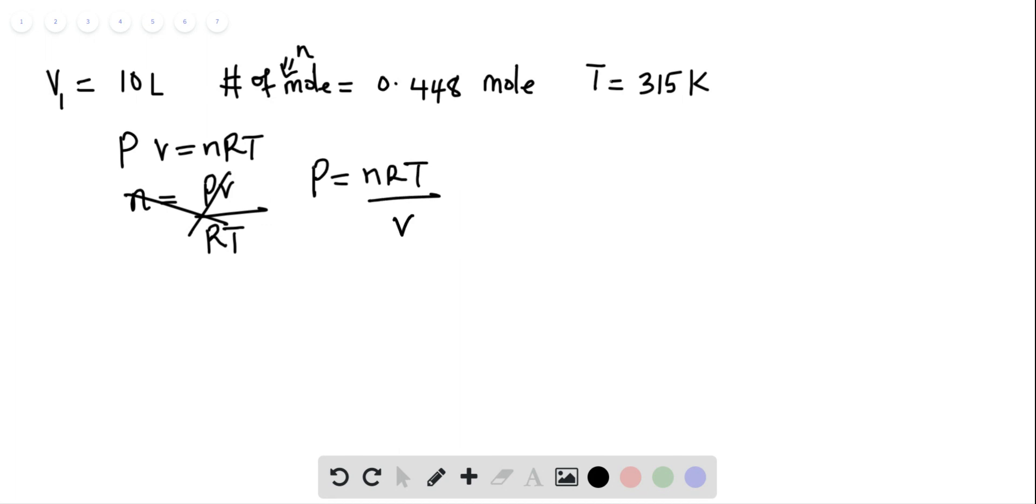The number of moles in this case is 0.448 mole. R is the gas constant and that will be 0.08206 liters atmosphere per mole per Kelvin, multiplied by temperature in Kelvin which is 315K, divided by volume which is 10 liters.